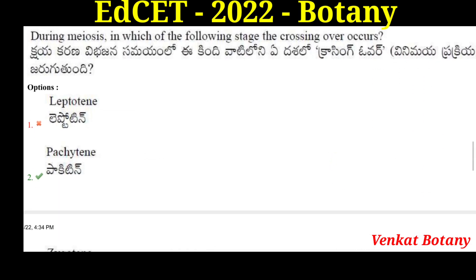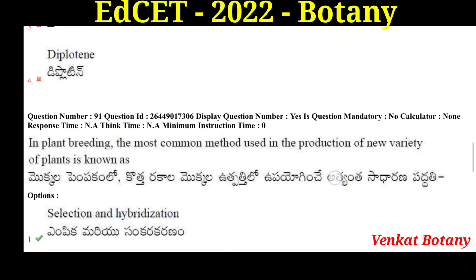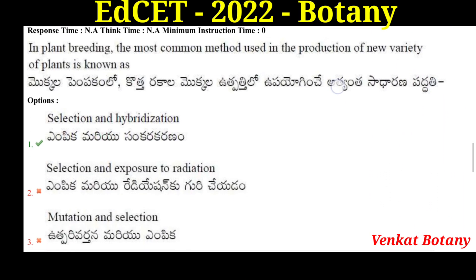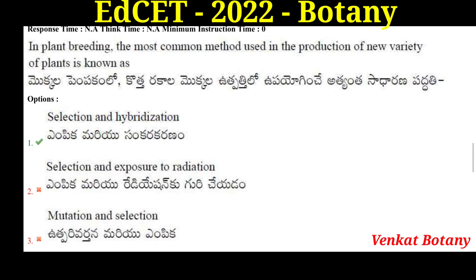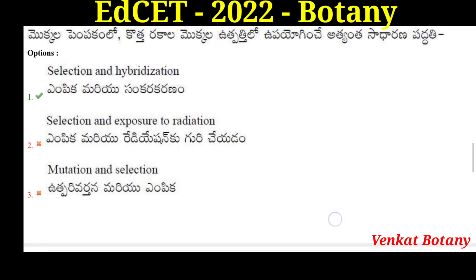During meiosis, in which stage does crossing over occur? Crossing over occurs during pachytene. In plant breeding, the most common method used in the production of new varieties of plants is hybridization — selection and hybridization are the methods used.